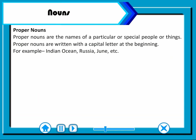Proper nouns are the names of a particular or special people or things. Proper nouns are written with a capital letter at the beginning. For example: Indian Ocean, Russia, June, etc.